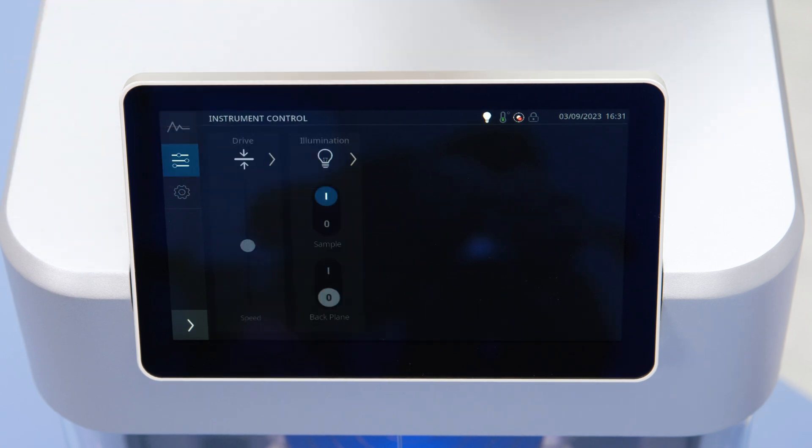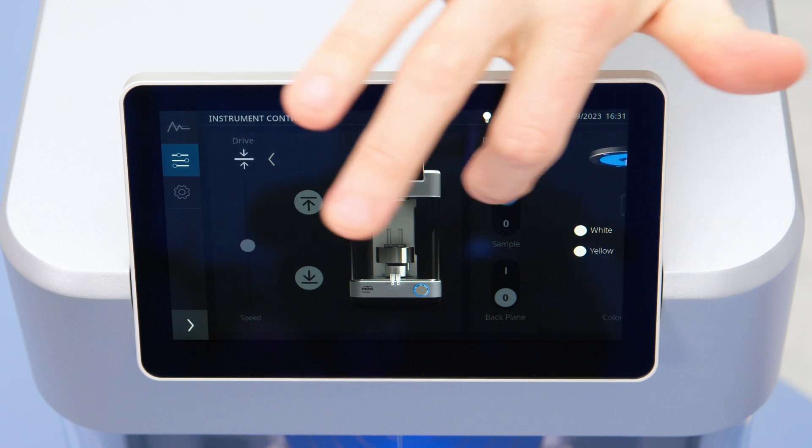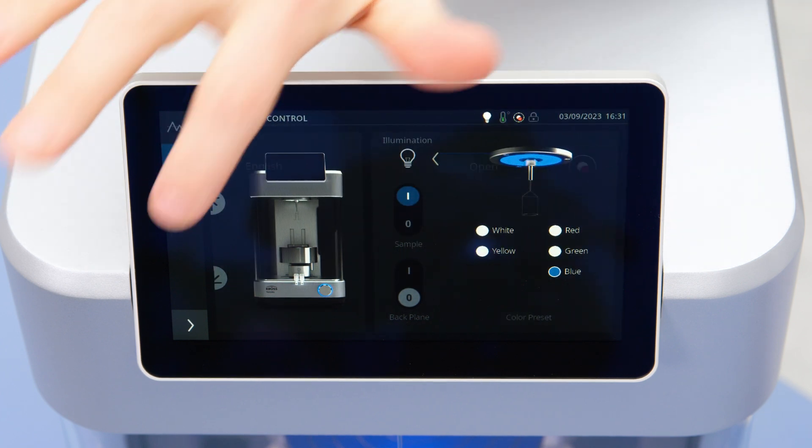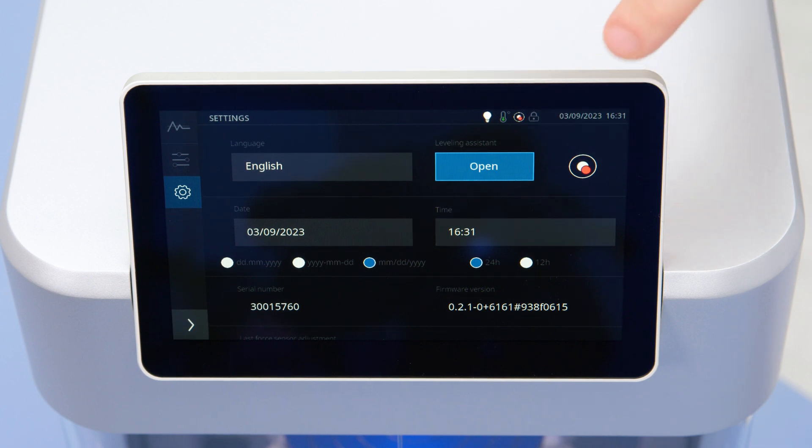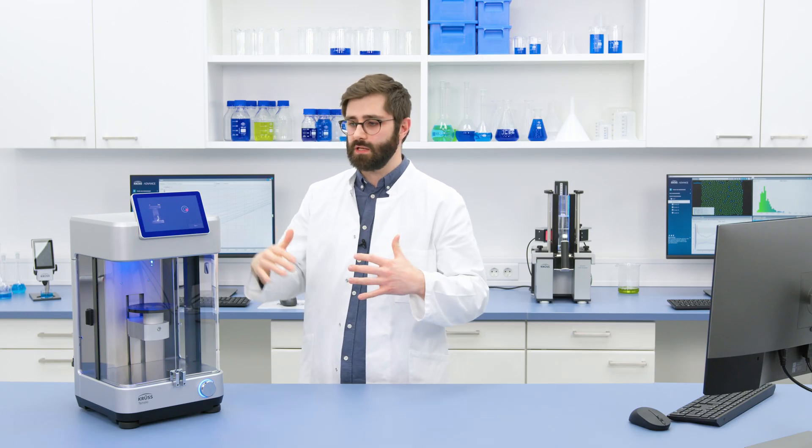If we look through some of the functions, you can see I can control the sample position, lighting of the instrument, or if we go into this setting here, Tensio has an inbuilt electronic bubble level that will tell you if the instrument is level or not.